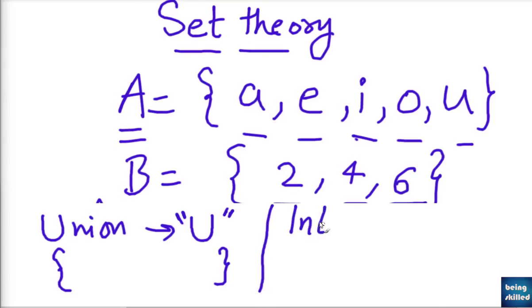Now there is another type which is intersection, which is denoted by this symbol. You can say mirror image of U. So what do you mean by intersection?